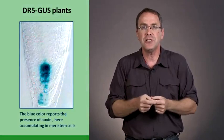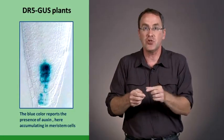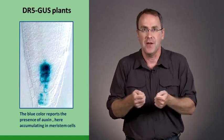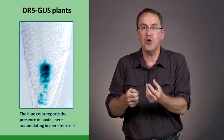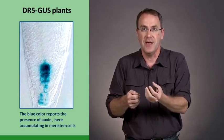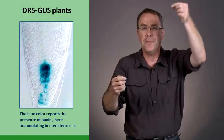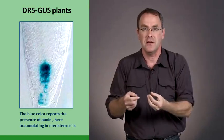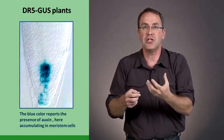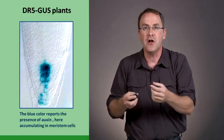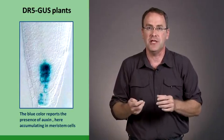You can see that here in this picture. This is a transgenic plant that has this new reporter gene. We can see that the blue color accumulates in the meristem, in the dividing cells at the tip of the root, where all of the auxin coming from the tip accumulates. So once again, this is a transgenic plant, and we're visualizing where auxin is active through this reporter gene.